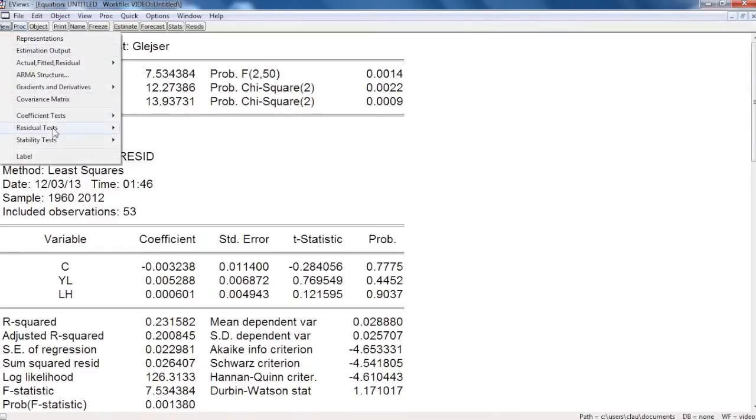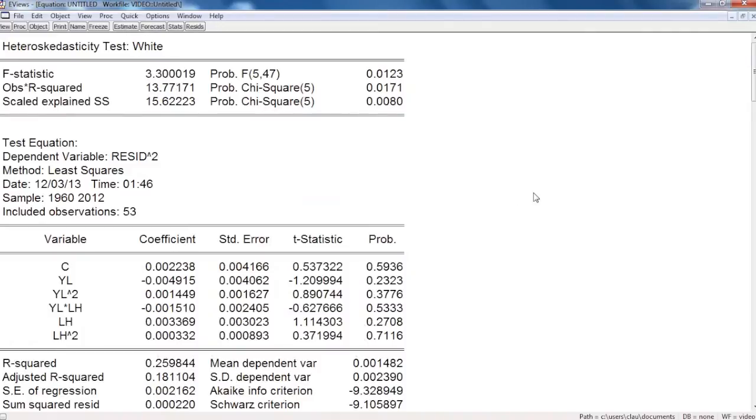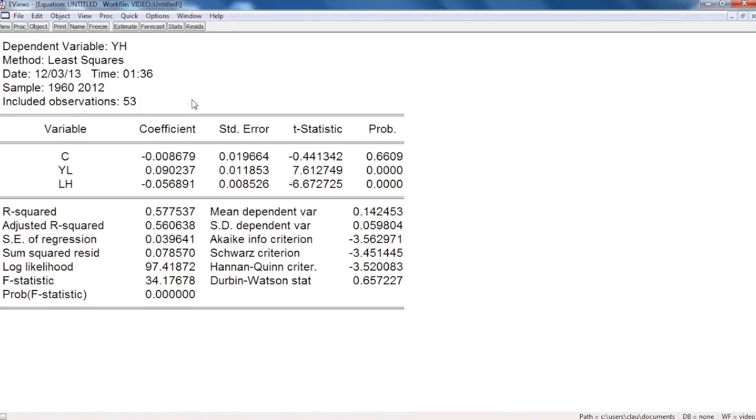And the last test, and the most powerful one, is the White test with cross terms. This also shows a really low probability, which allows us to reject the null hypothesis and to finally conclude that this model has a heteroskedasticity problem.